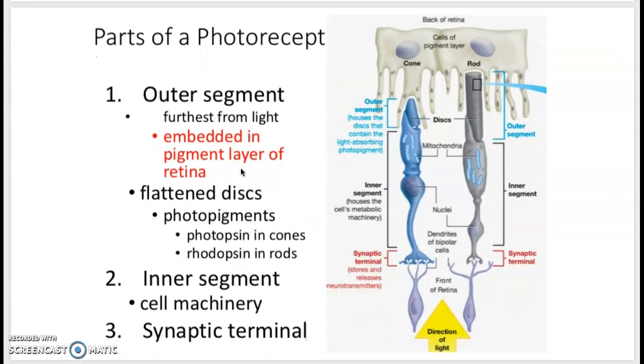So the photoreceptors themselves, the rods and the cones, have three different parts. There's the outer segment here, and these have little discs in them that have pigments that can absorb light. The pigments in cones are called photopsin and rhodopsin in rods.